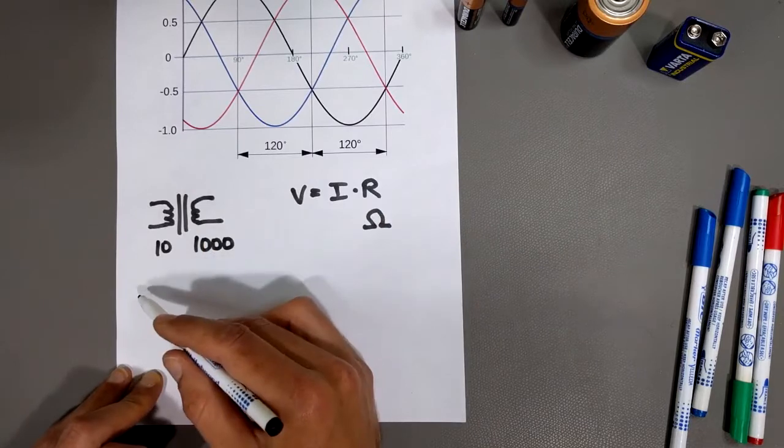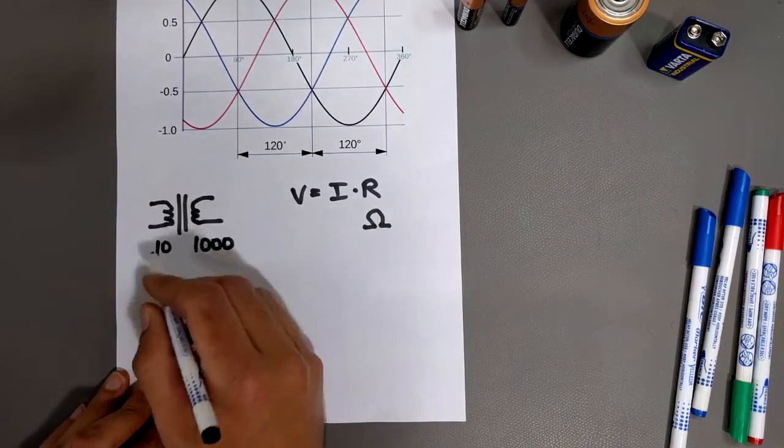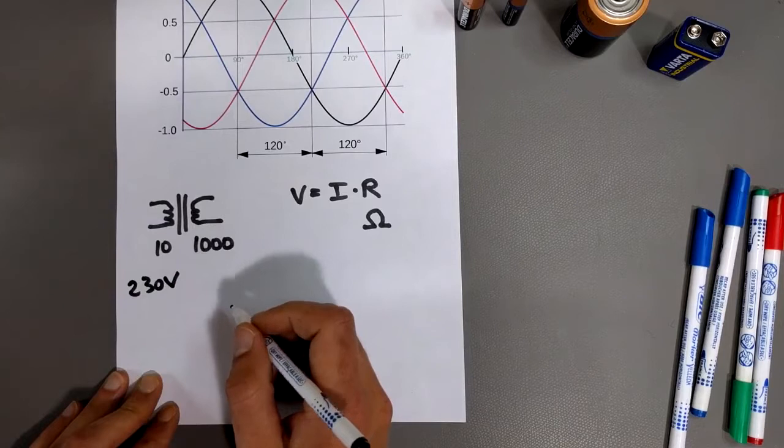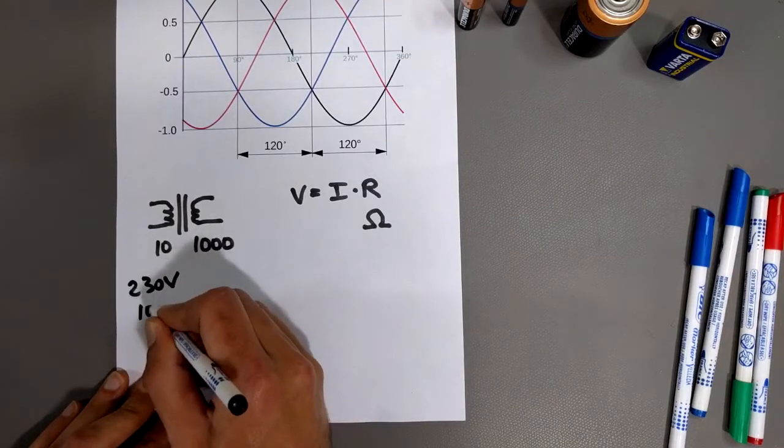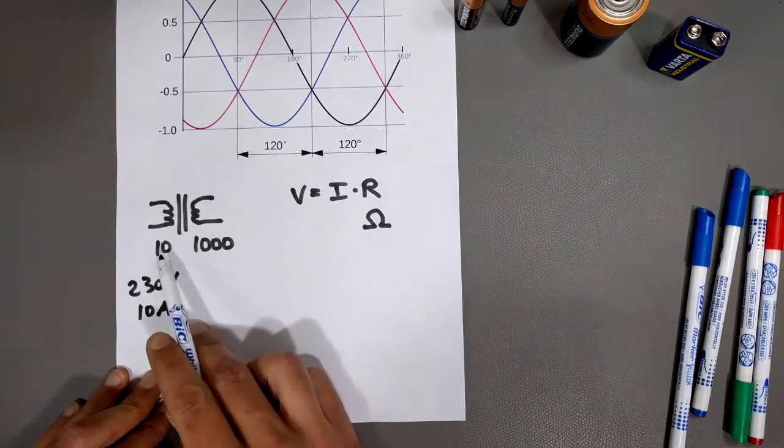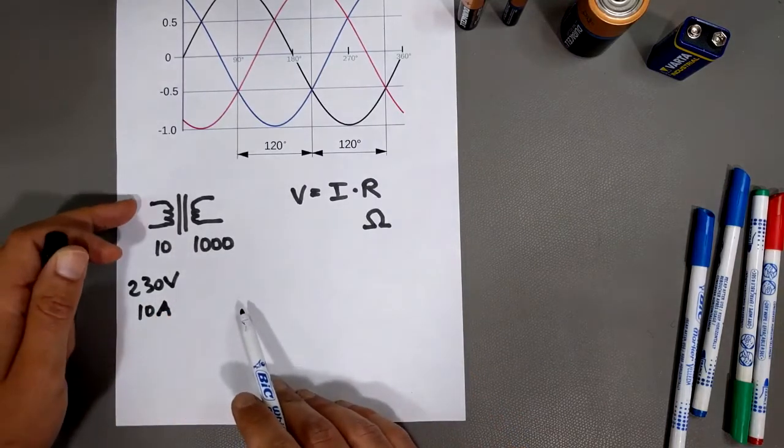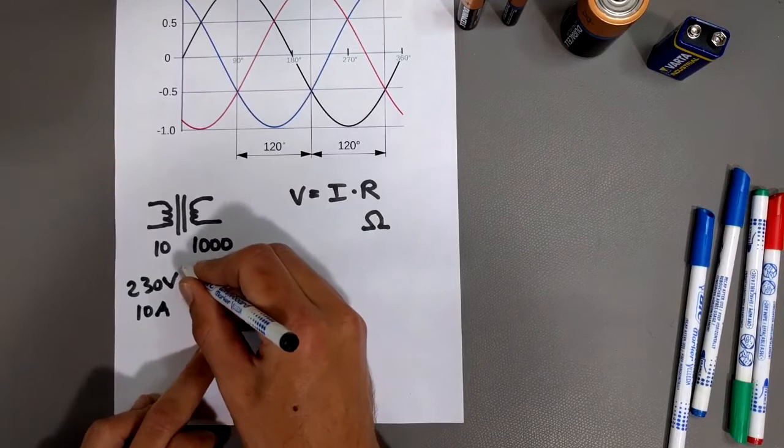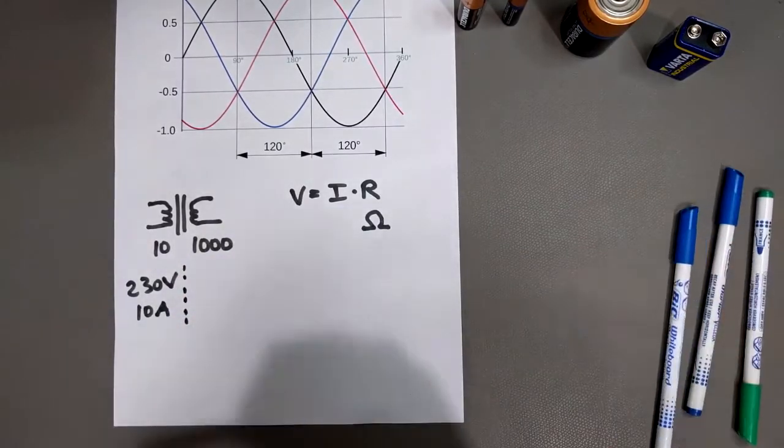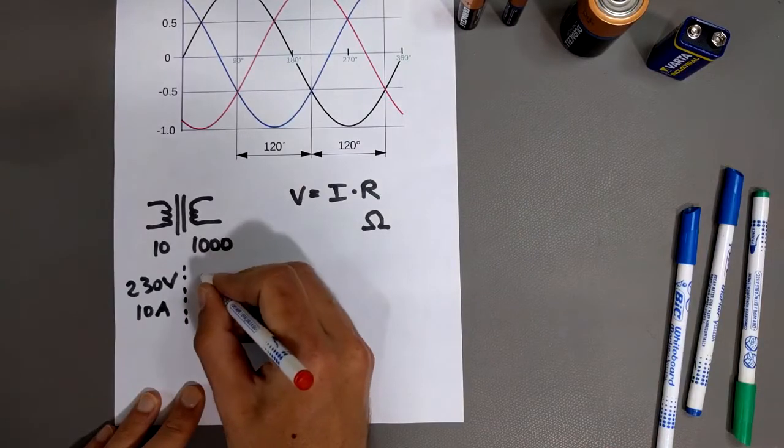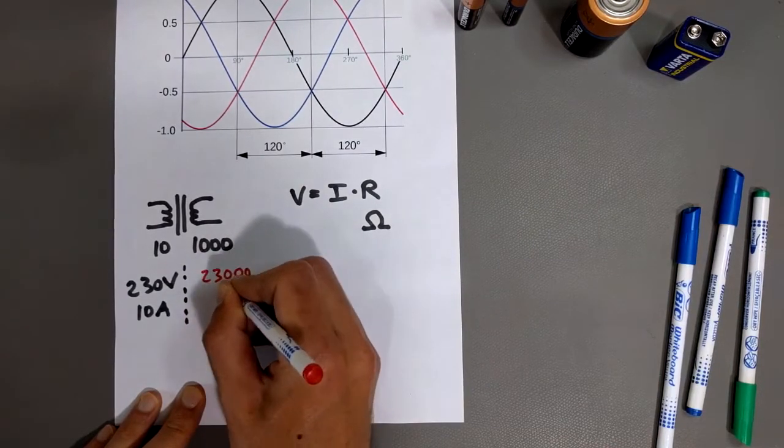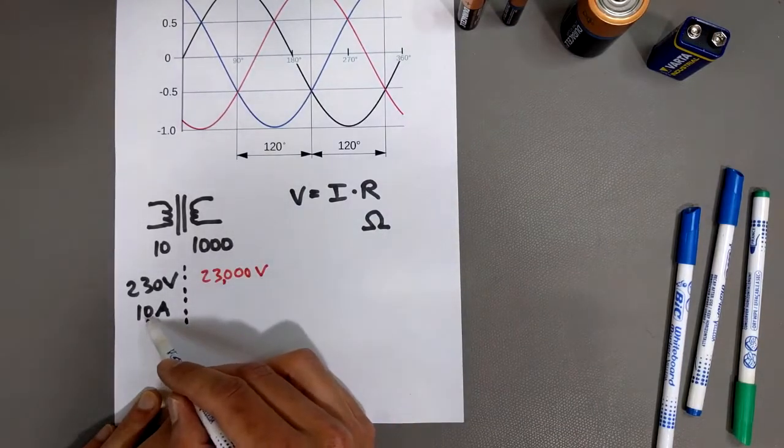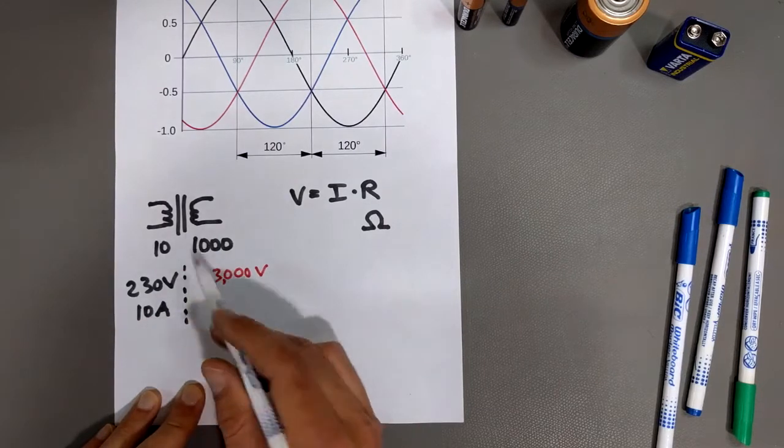let's say we put in 230 volts here at 10 amps. You put 230 volts and 10 amps in here, and at the output of your transformer, you get 100 times as much. So at the output you're going to get 100 times as much, 23,000 volts, but you're going to have 100 times less current. That's the trick of a transformer.